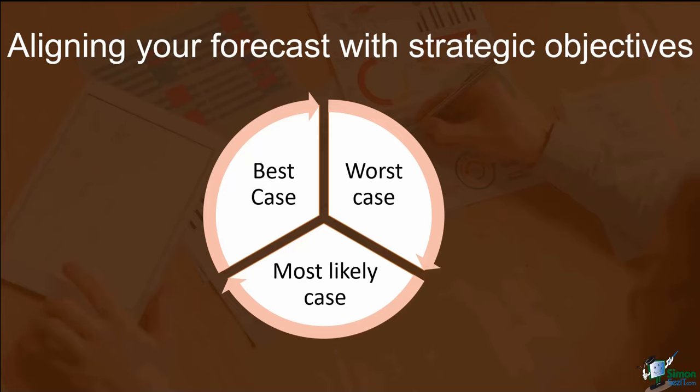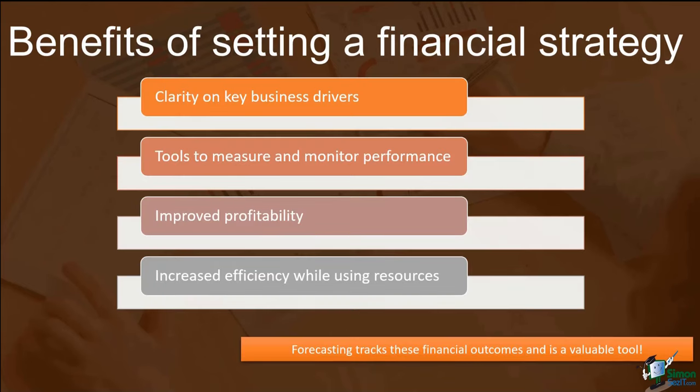The benefits of setting a financial strategy include: clarity on the key drivers of your business — you have to find out the key aspects of your plan that need to be achieved to reach your expected results; tools to measure and monitor performance — your financial forecast can include key performance indicators such as minimum monthly sales, maximum level of expenses, and you can measure these against actual results. By having a budget and comparing to actual results, you will quickly see what's working and what's not and make changes so that your profit can improve. This is what improved profitability is all about.